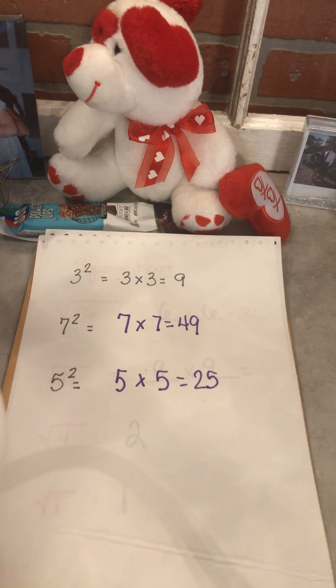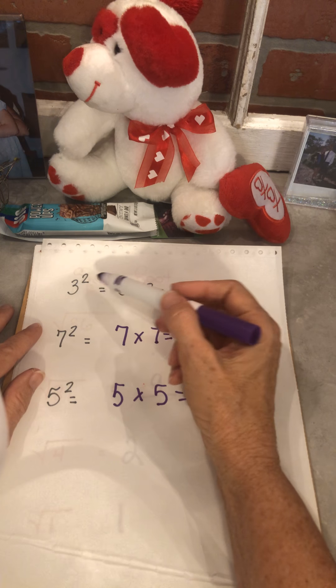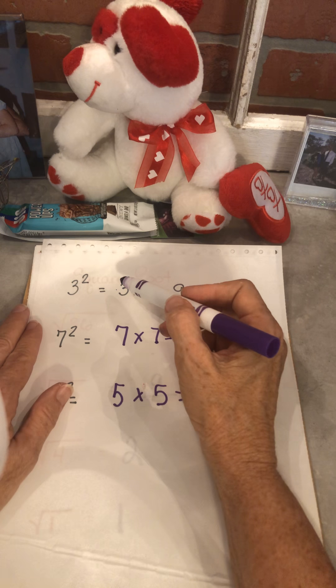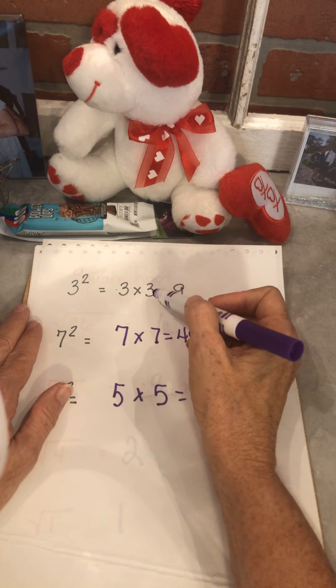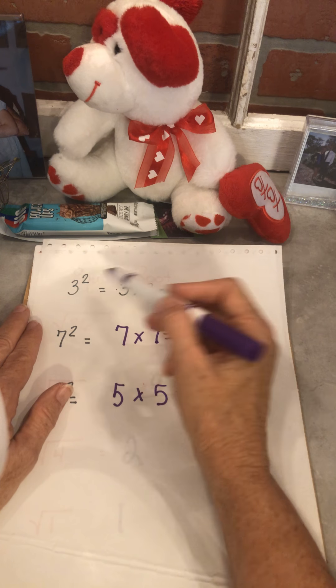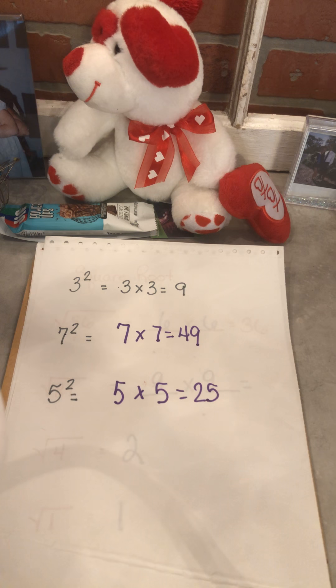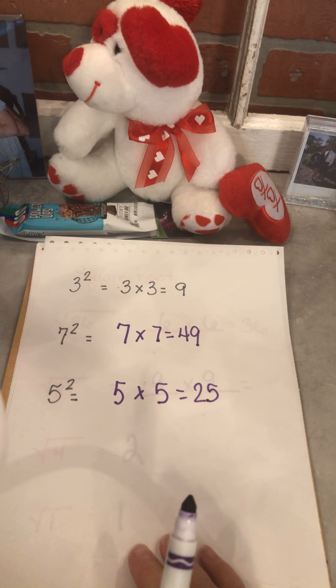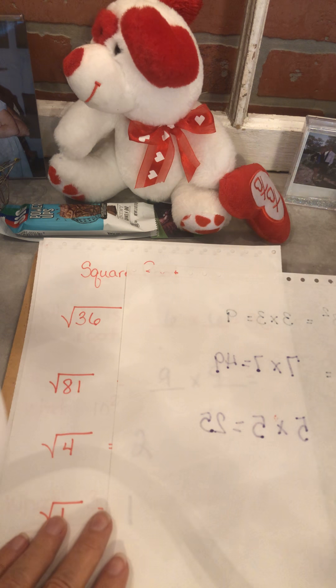Now, three squared. You need to know this and we just did this a few days ago also. Really means three times three, not three times two. Three times three, you take the three, you write it twice, and you get nine. Seven squared is seven times seven, which is 49. Five squared is five times five, which is 25.